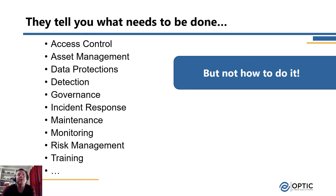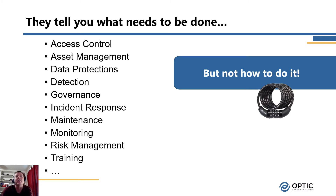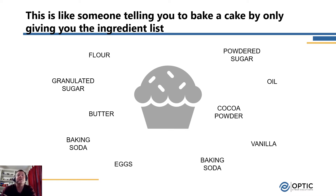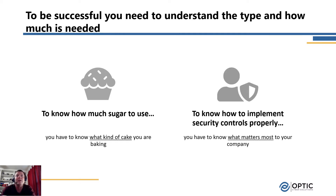As we think about the appropriate 'how' for our organization, consider physical access controls — standards say we need to limit physical access to our facilities, but how do we do that? Is a bike lock on the door sufficient, or do we need something more robust? Think of it like being asked to bake a cake for a celebration and being handed a list of all the ingredients for a typical cake. Would you know how to make the right cake? Probably not — having an ingredient list helps you understand what goes into a cake, but how much sugar you use depends on what kind of cake you want and how many people you're feeding.